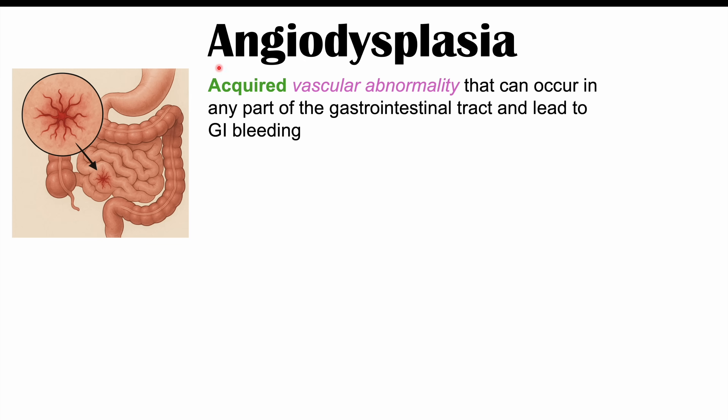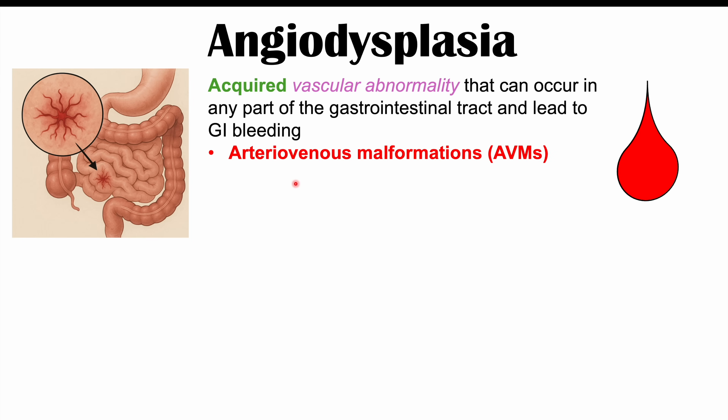More specifically, it's an acquired vascular abnormality — we're not born with it. We get it oftentimes later in life. It can occur in any part of the gastrointestinal tract and can lead to GI bleeding. It is what we call an arteriovenous malformation, or AVM — often a degenerative lesion that grew from a previously healthy vessel.